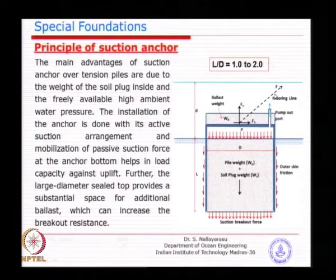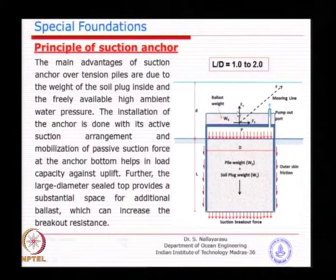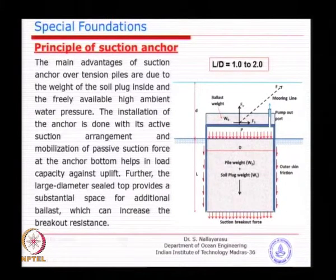The mooring line load can be applied inclined or horizontally, giving a horizontal and vertical component. The horizontal capacity design is straightforward — similar to lateral pile capacity but for a large diameter, short length caisson. Since it is such a massive size in soft material, applying horizontal load gives a nearly uniform pressure distribution from the soil, so one of the established cases for lateral pile capacity can be applied.